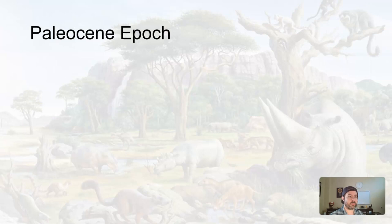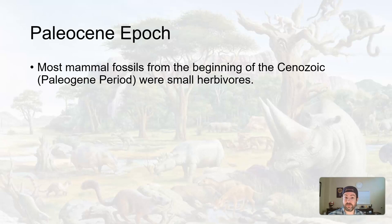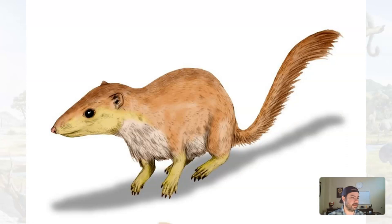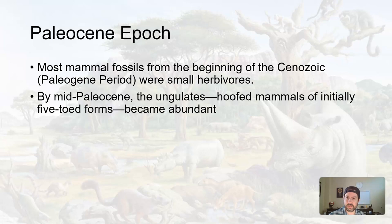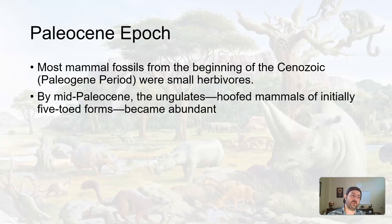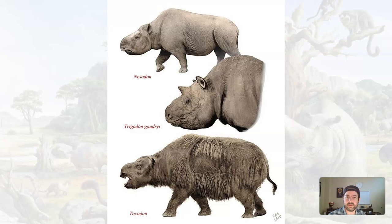Let's jump into the first epoch of the Paleogene: the Paleocene. Most mammal fossils from the very beginning of the Cenozoic were small little herbivores, kind of like little squirrely-looking things. By mid-Paleocene, the ungulates — hoofed animals — initially had five toes. These ungulates became abundant, and hoofed animals that evolved during the Paleocene include things that look kind of like rhinoceros-type, loosely ancestral-looking creatures.